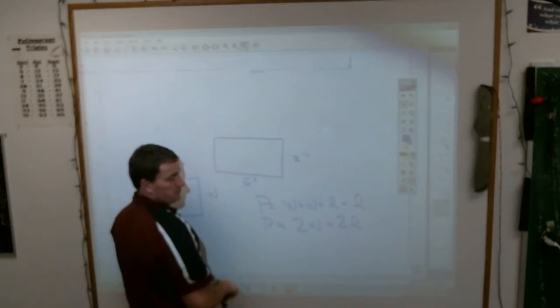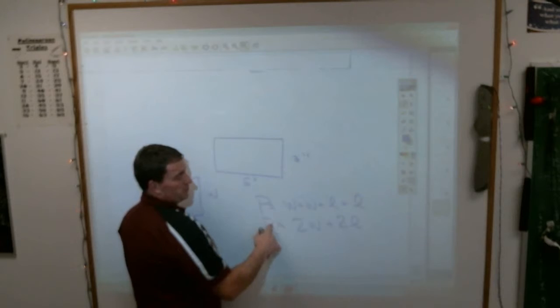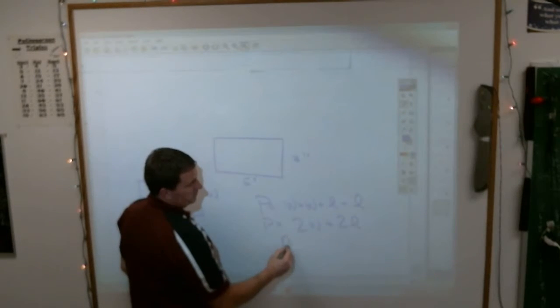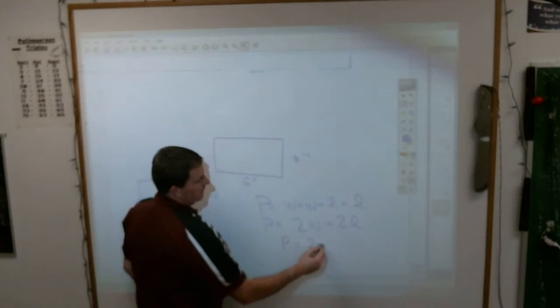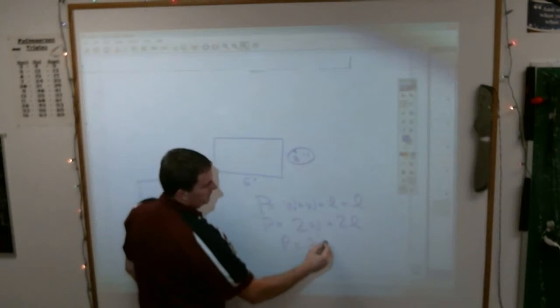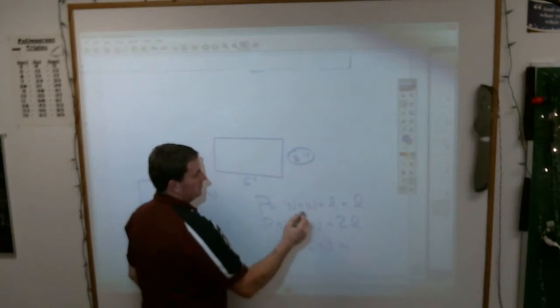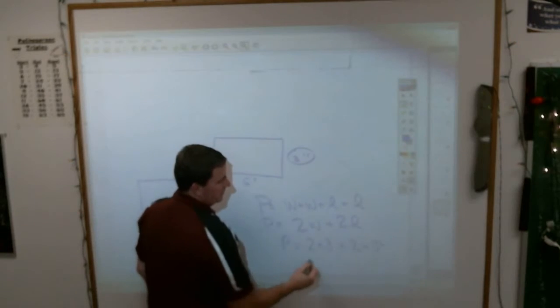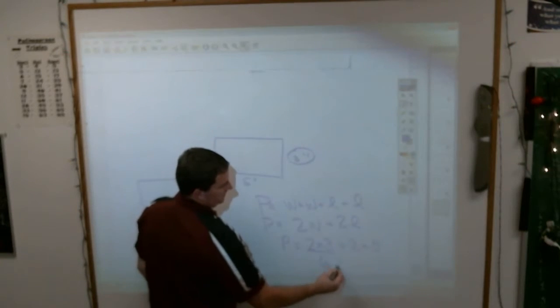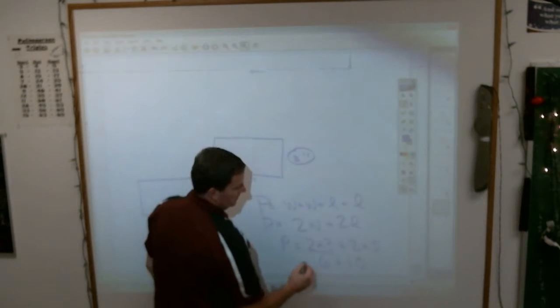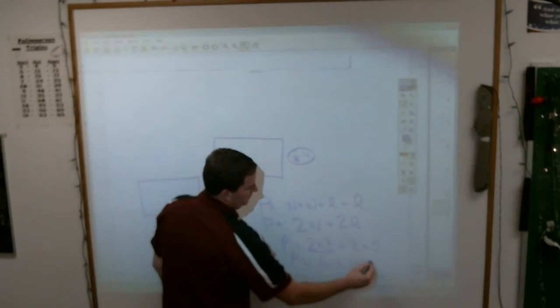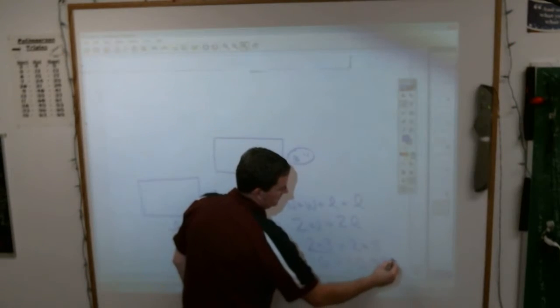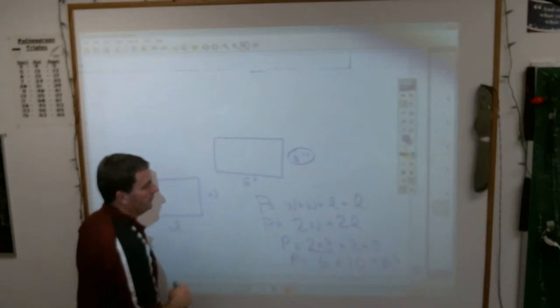So if you see this, this is what the perimeter equals. Perimeter equals 2 times whatever the width is, which happens to be 3, plus 2 times whatever the length is, which happens to be 5. 2 times 3 is 6. 2 times 5 is 10. So perimeter is going to equal 16. And that's what you'd get if you added all of those together.